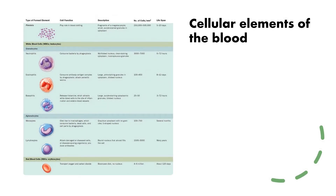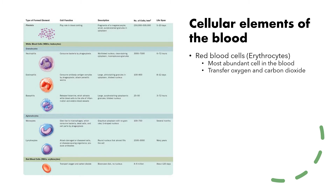Let's talk about the cellular elements of the blood. Blood is made up of cells and plasma. The cellular elements include red blood cells, also known as erythrocytes. They are the most abundant cell in the blood, which is why your blood is red, and they transfer oxygen and carbon dioxide as well as other nutrients to the tissues.